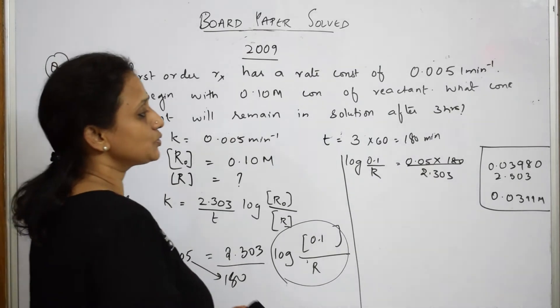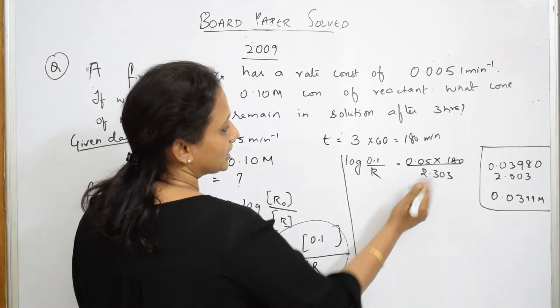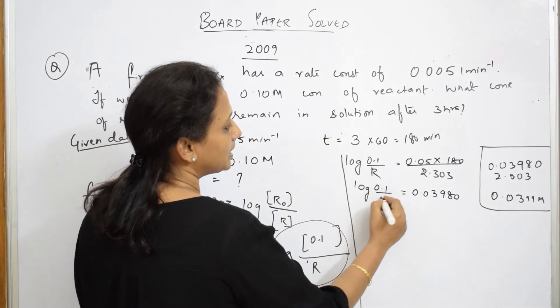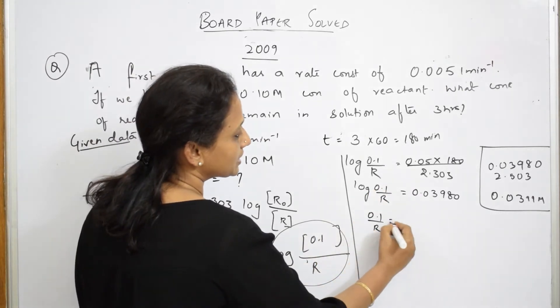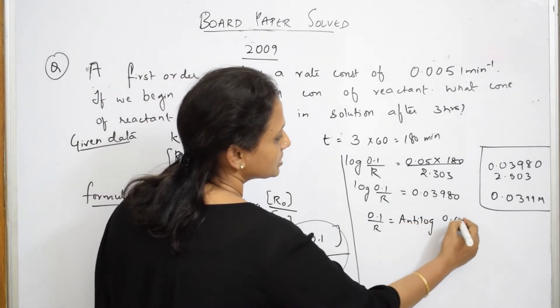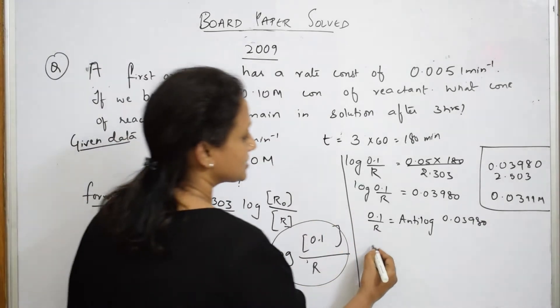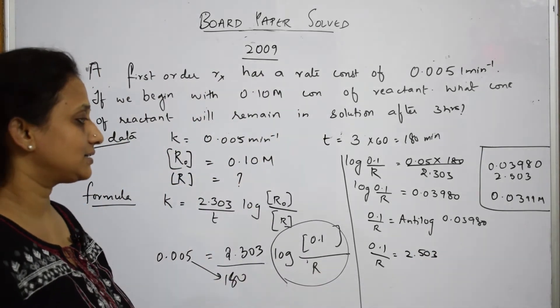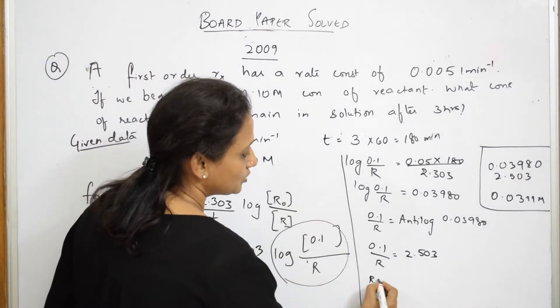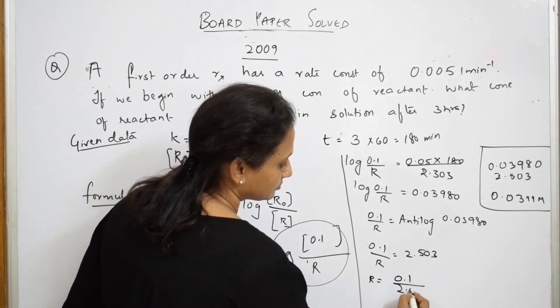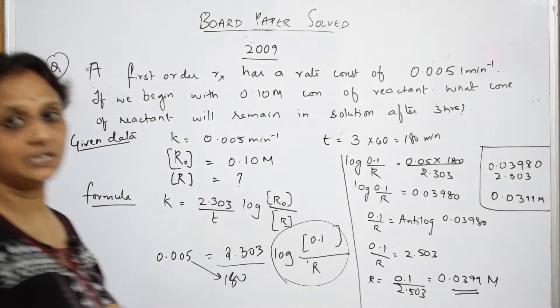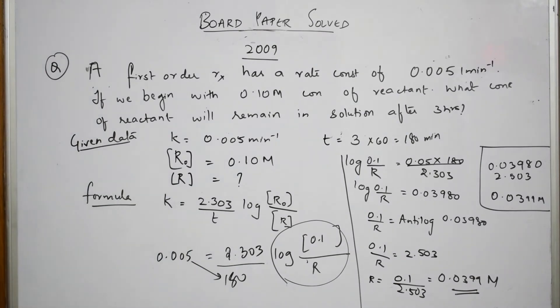To find this R, I have written this formula. Let us see how to simplify this. Take this whole log 0.1 by R on this side. Cross multiply with this. This becomes 0.05 into 180 divided by your 2.303 value. Once you solve this, you get an answer of 0.0398. So log of 0.1 by R is so much. Now what is 0.1 by R? This becomes antilog of 0.03980. When you solve this, you get an answer of 2.503. I still didn't get the R value. So R is equal to 0.0399 molar because the concentration is measured in molar. This is your sum.